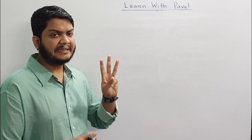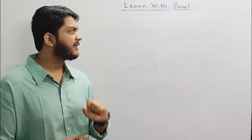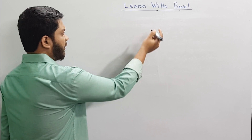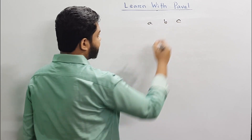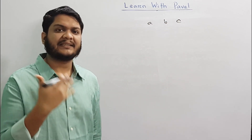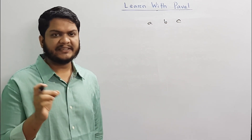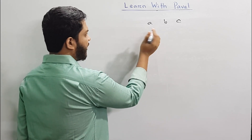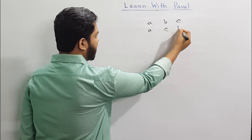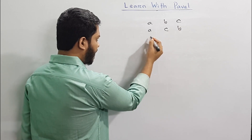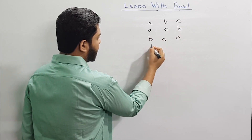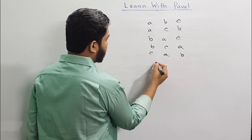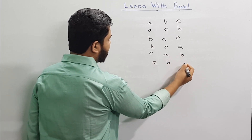We have three objects: A, B, and C. We have to check the results — how to check the results. I will check the results: CBA, BAC, BCA, CAB, and CBA.